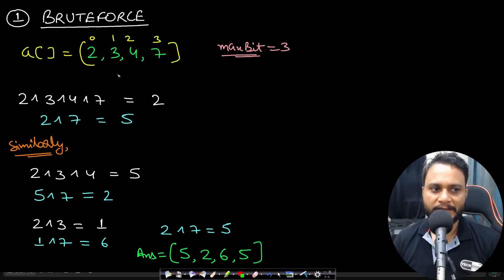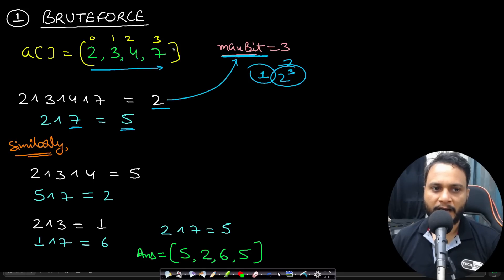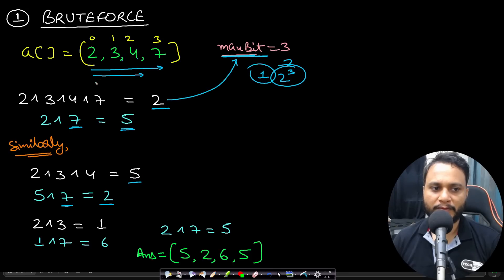The simplest approach is: take the array and find the XOR of all items — 2 XOR 3 XOR 4 XOR 7 = 2. Then try this XOR value with all possible k values from 1 to 2 to the power of 3 to find the maximum. XORing with 7 gives the maximum of 5. Then iterate from the first item to the second-last, find XOR = 5, and try all k values — with k = 7 you get max value 2. Repeating yields answers 5, 2, 6, 5.